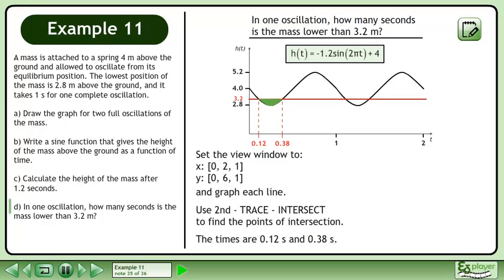Use second-trace-intersect to find the points of intersection. The times are 0.12 seconds and 0.38 seconds.